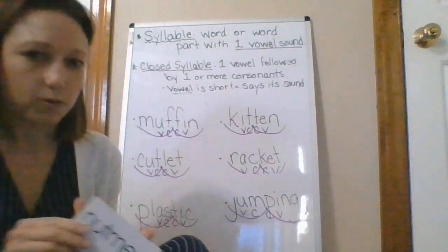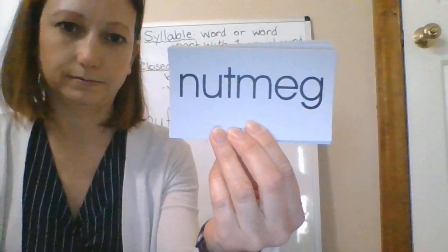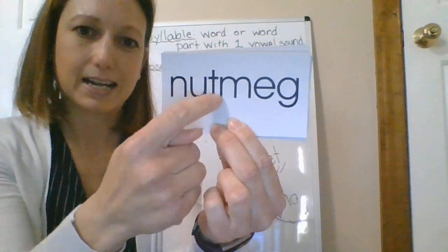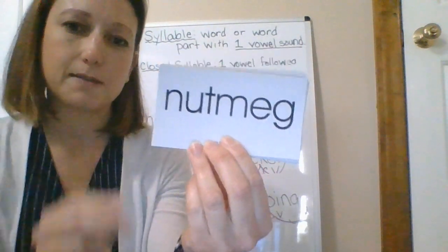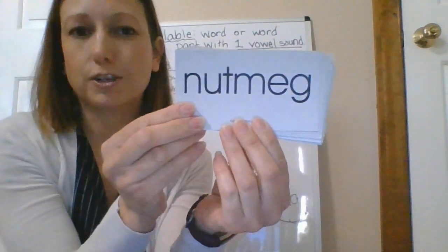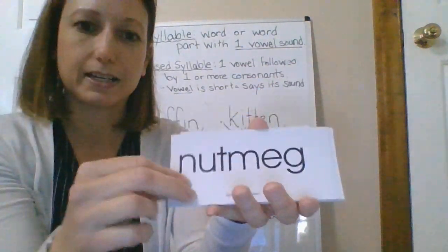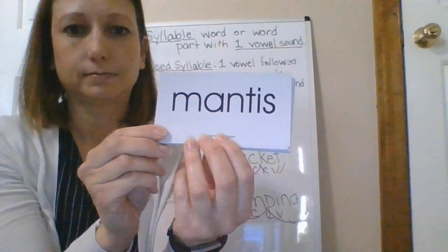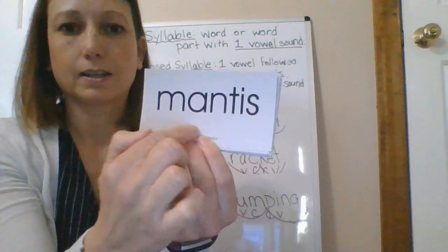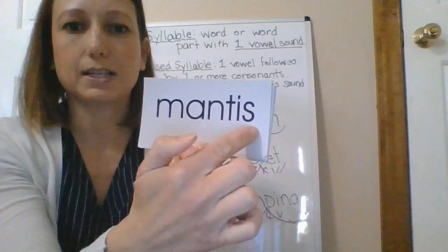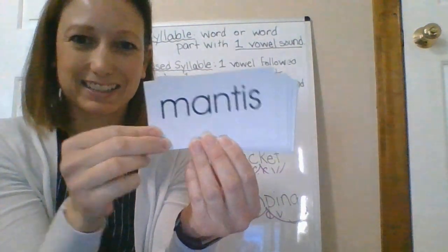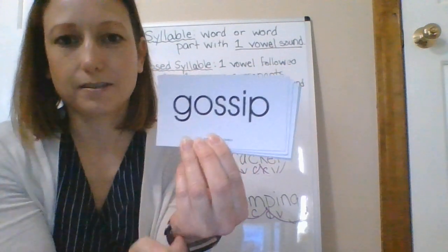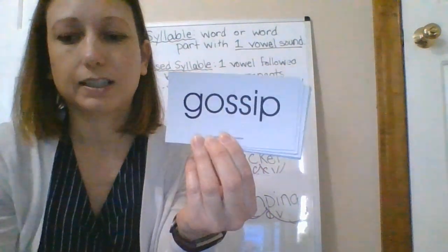Let's practice reading some words. Think about where you're going to break it. Nut-meg — nutmeg. Nutmeg is a spice; you might put it in French toast or pumpkin pie. Look for your two consonants. Man-tis — mantis, as in a praying mantis — it's an insect. This one, you immediately see the two S's right there — gossip.